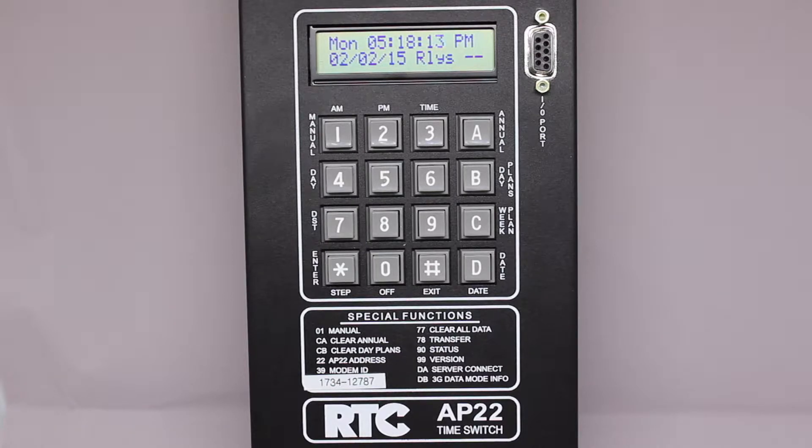You'll see here that on the display it shows that the current date is Monday, February 2, 2015. Today is actually Wednesday, August 30, 2017,